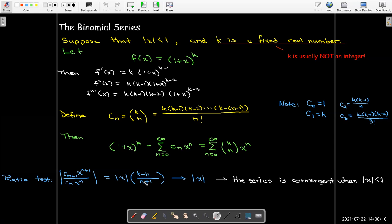From this ratio test, notice that we get a really nice way of calculating the coefficients. They satisfy this recursion formula. If I've calculated c sub n, I can calculate c sub n plus 1 by just multiplying c sub n by the fraction k minus n over n plus 1.